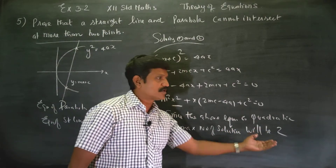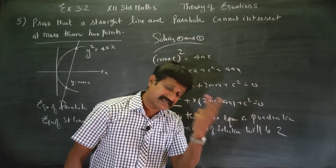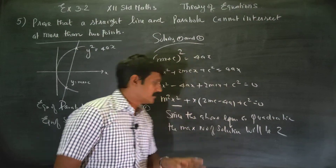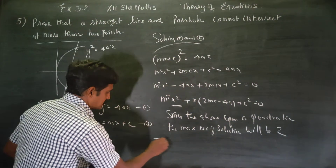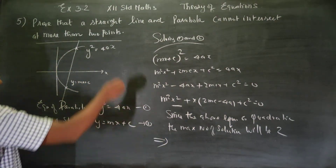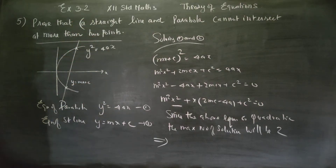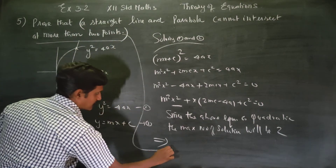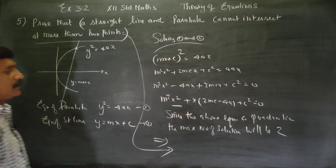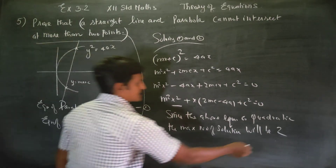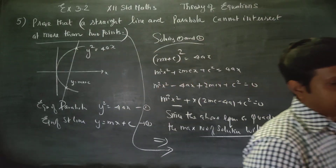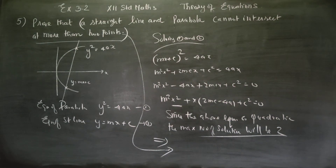Maximum solutions for x is 2. Therefore y is determined at the points of intersection. This implies that the straight line and parabola cannot intersect at more than 2 points. Since the solution gives only 2 values of x, using those 2 x-values we can get a maximum of only 2 y-values — that is, 2 points.